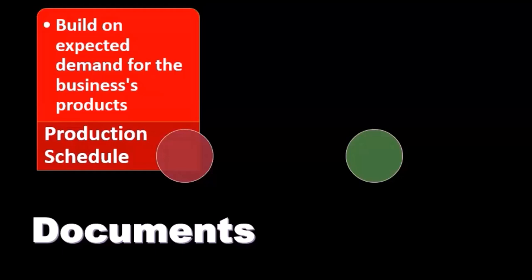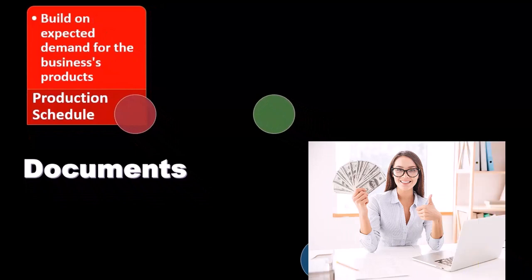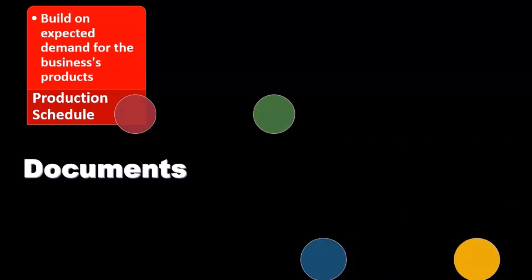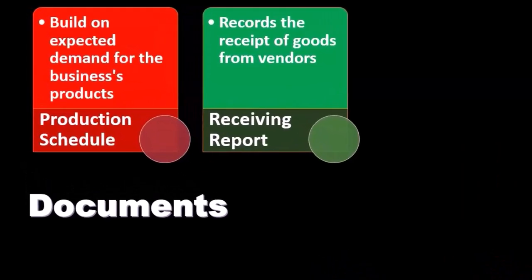We want to build an expected demand for the business's products. If we have a normal expected demand, we can have more assurance about the inventory process and the production schedule. If the demand is a lot more volatile, then we have more risk involved in terms of the production schedule.